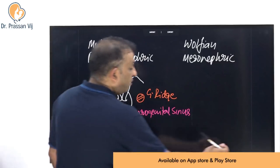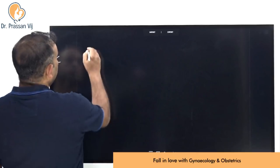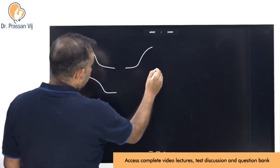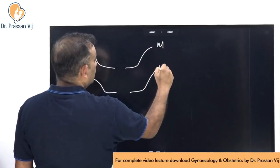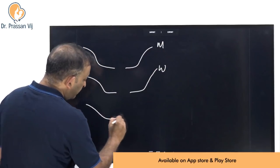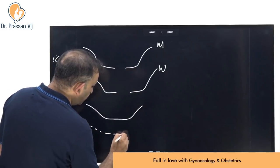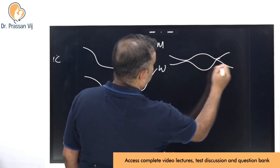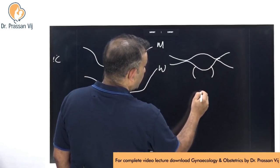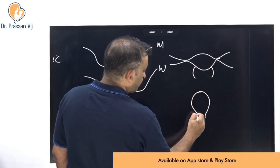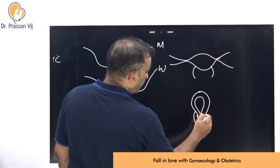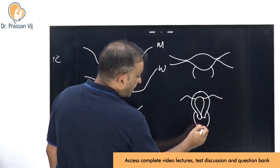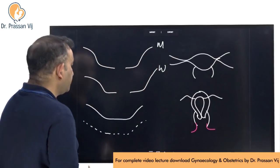There are two Müllerian ducts and two Wolffian ducts in all of us. In a woman, the two Müllerian ducts come and fuse while the Wolffian ducts obliterate. This fusion forms the early uterus shape, with outpouchings that ultimately complete uterine formation. The upper part of the vagina is contributed by the Müllerian duct, with the fallopian tubes, and then the urogenital sinus fuses with this to complete formation.